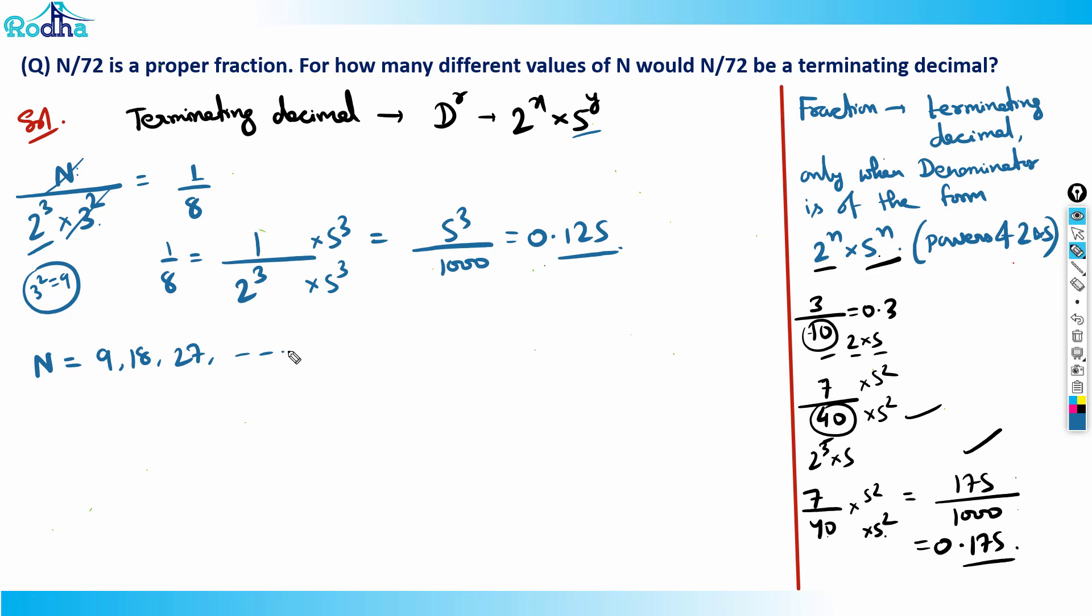For example, if N equals 18, what will happen? 18/(2³ × 3²). This will cancel two times. It becomes 1/4, and 1/4 is a terminating decimal, 0.25.